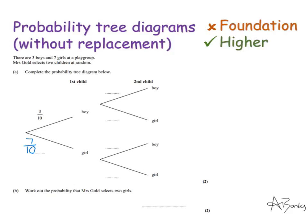If on the first child she picks a boy, what is the probability of picking another boy? She's already picked a boy, so there will only be two boys remaining out of nine children, not ten. So the probability on this second branch is two out of nine. If she picks a boy on the first child, there are still seven girls out of nine in total — that's seven ninths. Again, the pair of fractions on those branches adds up to one.